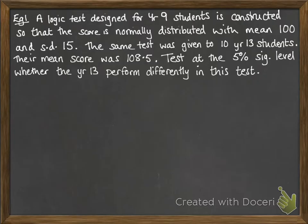We want to test at the 5% significance level whether the year 13 performed differently in this test. We can approach this exactly the same way we did in the last video, but we can also standardise the test statistic first and then do it comparing the z values instead.